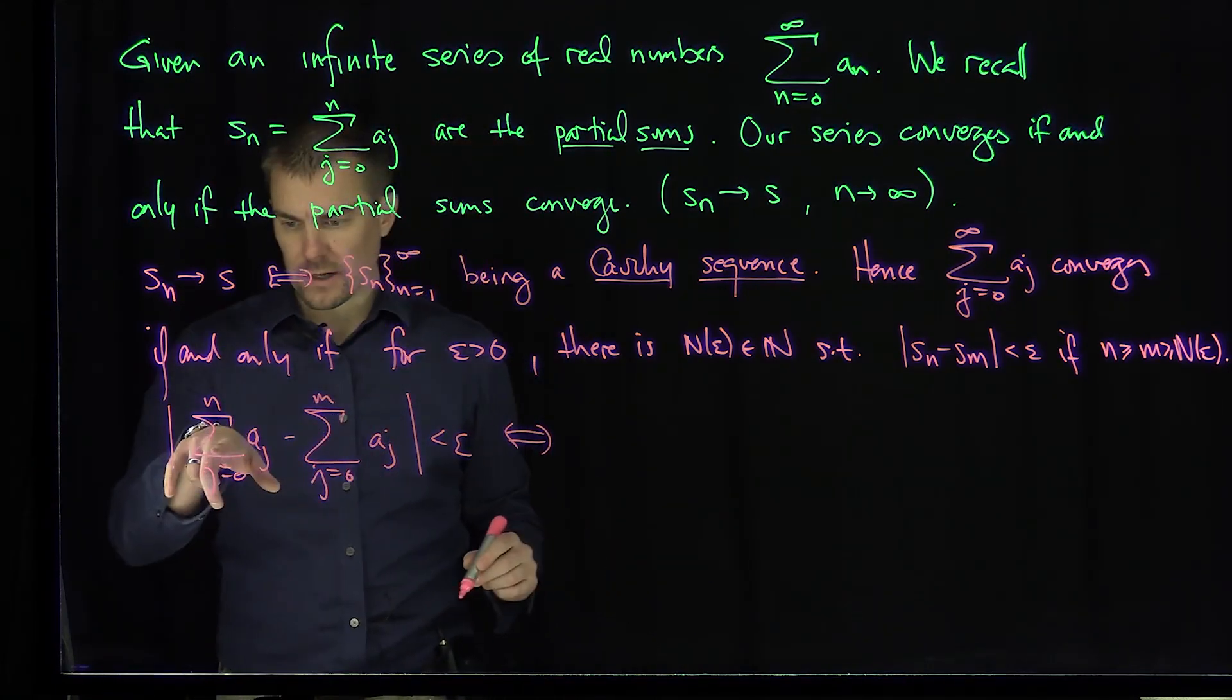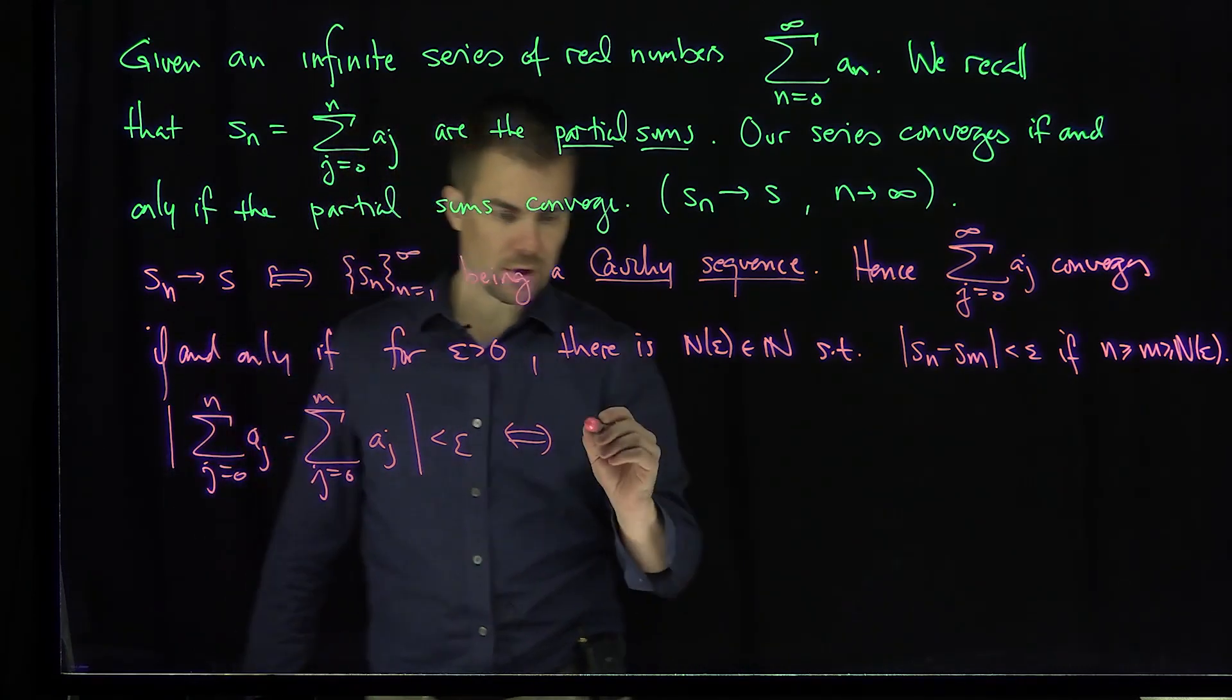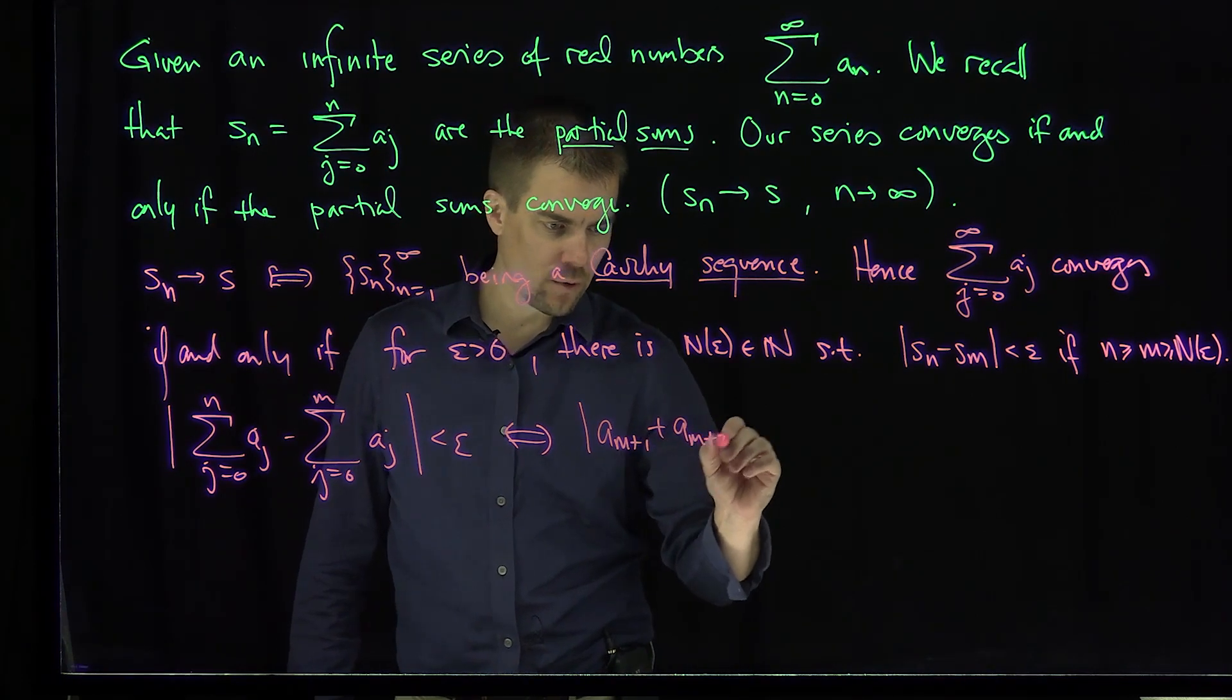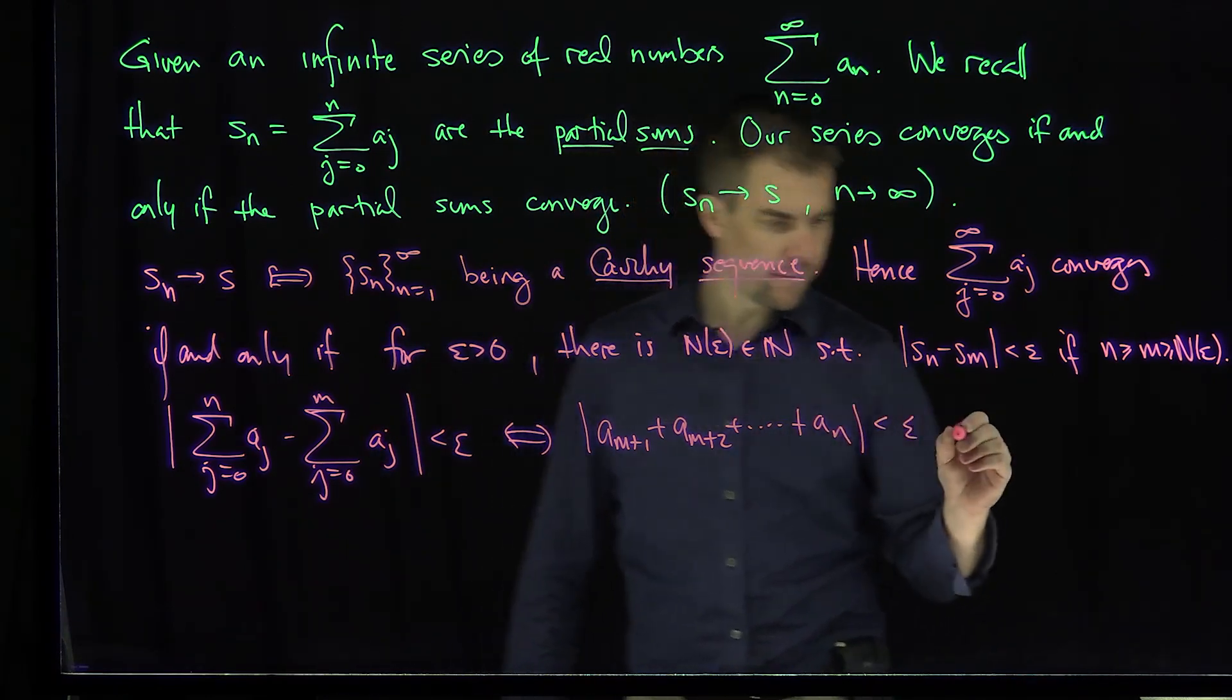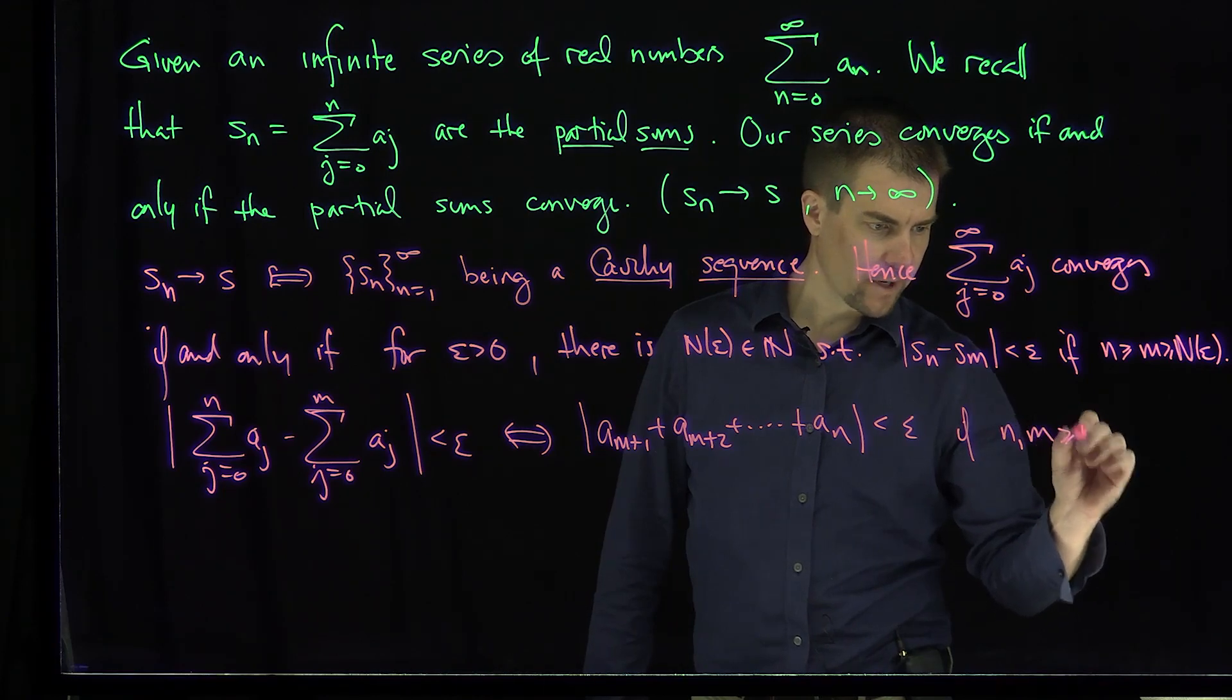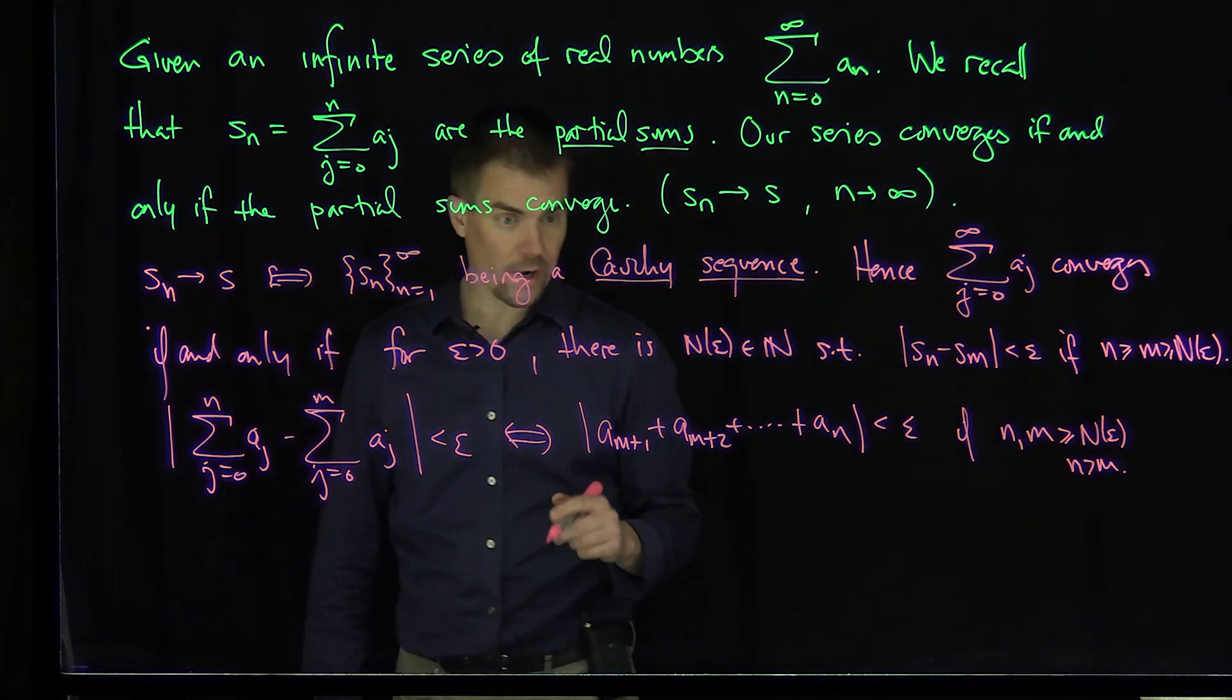The first m terms over here are contained in the sum of the first n terms. So I'm going to start with the (m+1)st term. So if and only if the absolute value of a_{m+1} plus a_{m+2} plus all the way down to a_n is less than epsilon if n and m are bigger than or equal to N_epsilon with n bigger than m.